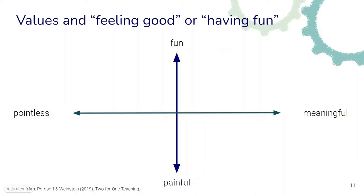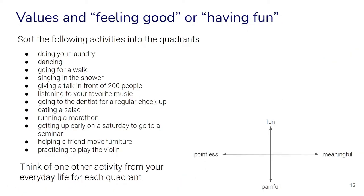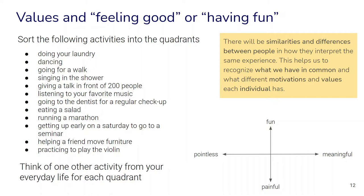This activity is adapted from the book by Lorne Porosef and Jonathan Weinstein, Two for One Teaching. You can sort a number of different activities and experiences into these quadrants, or think of activities from your own everyday life. Through such an activity we can find out what we actually find meaningful in life even if it might be painful, and also what we find fun whether or not it's meaningful. In groups, we will find similarities and differences between people in how they interpret the same experience, and also that we individually might interpret the same experience differently at different times. This can help us recognize what we have in common with others and what different motivations and values each individual has.